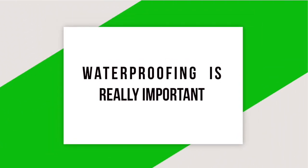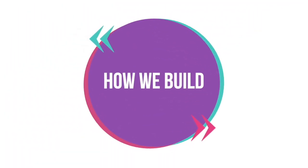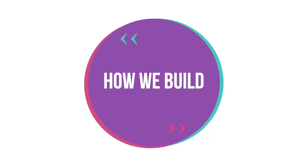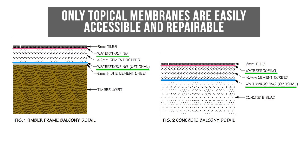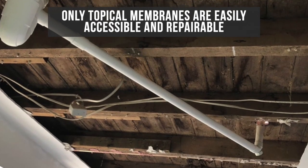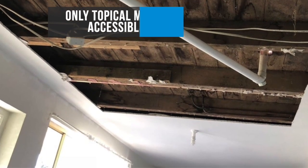Although how we waterproof is really important, we must consider how we build based on current standards. The movement being seen on balconies that are on timber frames is significant in areas other than just the junctions, which is why we're seeing Class 3 waterproofing membranes routinely fail. Knowing that we're going to expect failures, it does not make sense to install the membrane in the middle of the construction configuration — that is not accessible for repair, making it costly for the homeowner to repair water damage caused by failed membranes.